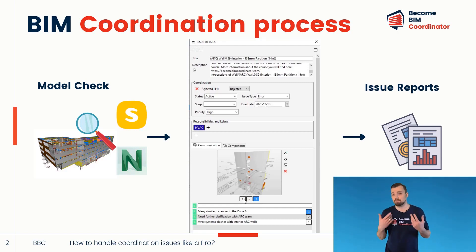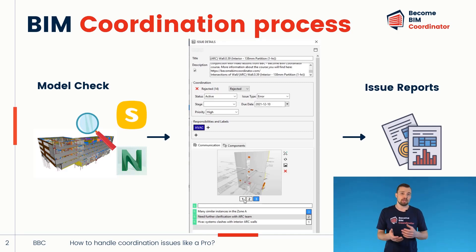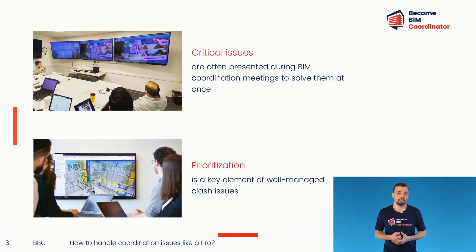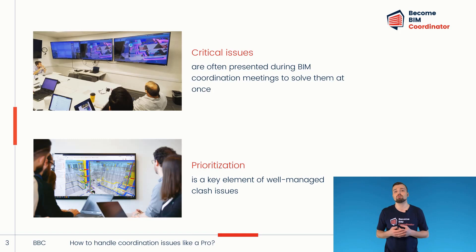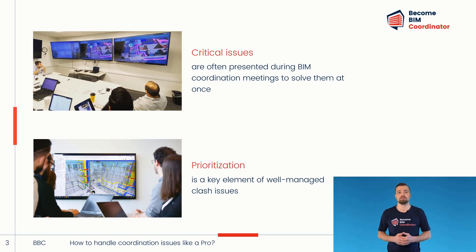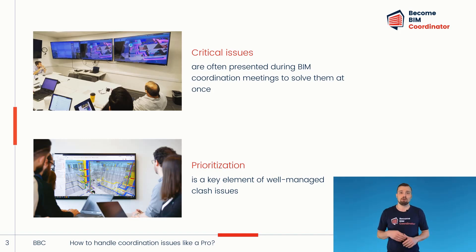The BIM coordinator then sends coordination reports to each industry before the scheduled coordination meetings. Major clashes and coordination issues are highlighted during these meetings to encourage the responsible team to resolve them. Remember that coordination is much more than just clash detection. The key to successful coordination is to not only identify issues, but also know how to prioritize them.